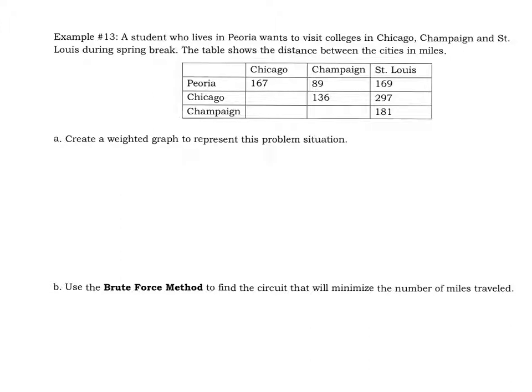So with example 13, let's read what it says here. A student who lives in Peoria wants to visit colleges in Chicago, Champaign, and St. Louis during spring break. The table shows the distance between the cities in miles. So we've got Chicago, Champaign, St. Louis, and Peoria.